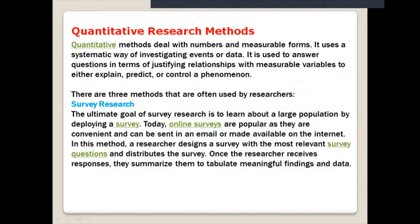Now moving to quantitative research methods. Quantitative methods deal with numbers and measurable forms. They use a systematic way of investigating events or data in a very organized way. It is used to answer questions in terms of justifying relationships with measurable variables - to either explain, predict, or control phenomena. You can show, understand, and then try to measure a relationship.